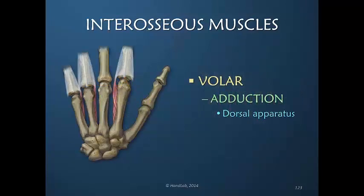The volar interosseous muscles, even though they are our adductors, insert into the dorsal apparatus. Does this make sense? Because now we can no longer imagine a synergistic pattern. We don't adduct in extension, but we do adduct in flexion. And because these muscles insert into the dorsal apparatus, they contribute to MP joint flexion. I would offer that the anatomy of the volar interosseous muscles is missing the bony insertion because it is obviously not necessary.